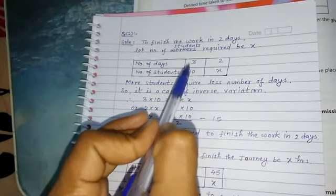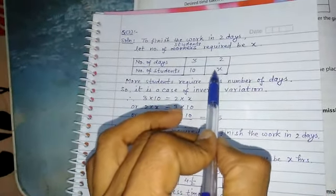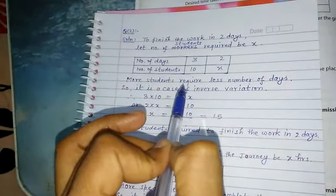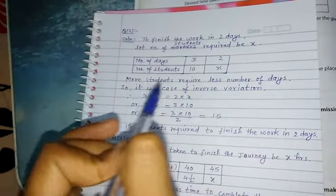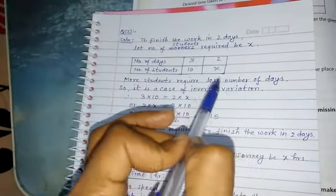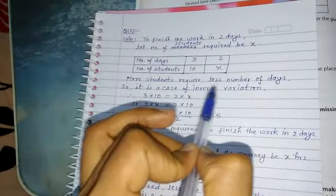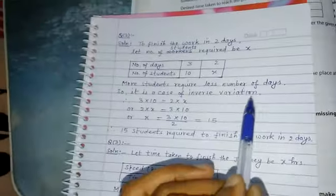Three days, ten students - this pair is given. Two days, then how many? x. Now here the condition is more students required, less number of days. More, less. This shows inverse variation. So it is a case of inverse variation.